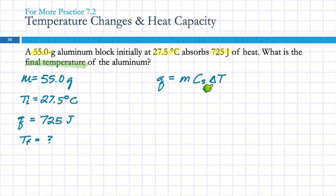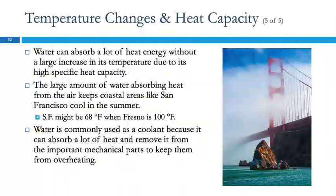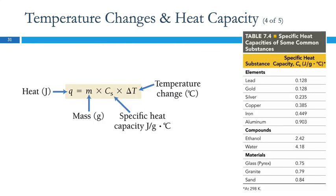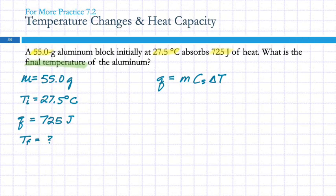So, this equation doesn't have T final in it specifically, does it? It has delta T. But we've got M and Q. Where are we going to get C sub S? We're going to look it up. Let's go look it up. Aluminum, 0.903. Down here, 0.903. So, C sub S, 0.903 joules per gram degree Celsius.